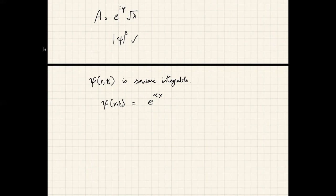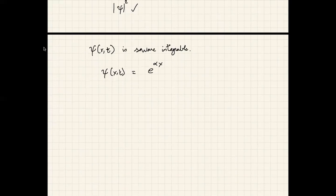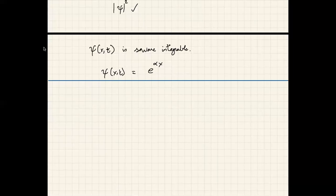So we have learned that to understand the state of a physical system you need its wave function, and that |ψ|² is related to the probability of finding the particle in some region of space. Since quantum mechanics is a probabilistic theory, let us take a quick side tour and familiarize ourselves with the basic rules of probability — things you likely know already, but I want to revise them so we are all on the same page.